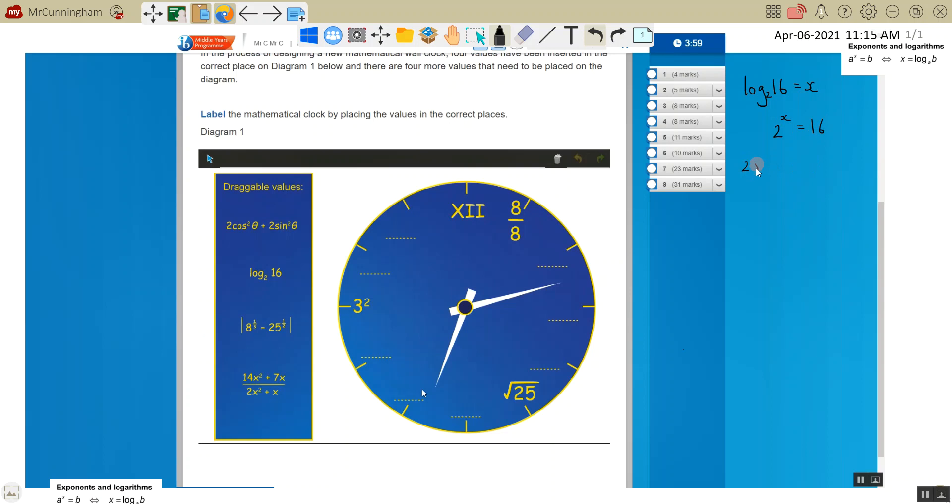So 2 multiplied by itself how many times gives us 16? Well, 2 times 2 is 4 times 2 is 8 times 2 is 16. So that's 4 times. So x is equal to 4. So you would drag, so there's 3, this is 4. Log 16 to the base 2 and put it in here.